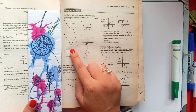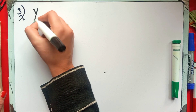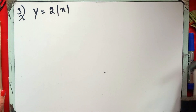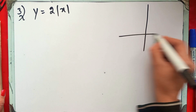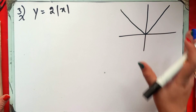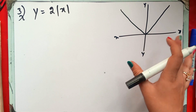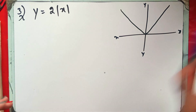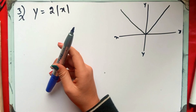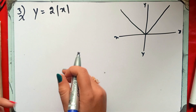We are now on question number 3. We have to check if the graph is one-to-one or not. The function is given in absolute value form: y = 2|x|. The graph of this function is V-shaped — a very easy graph. Let's see how we solve this easily, even though absolute value questions sometimes seem difficult.